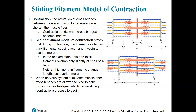This is going to end when the cross-bridges stop being formed. In the sliding filament model of contraction, the idea is that neither the thick filaments nor the thin filaments actually change length — they just move past each other. That's why it's called the sliding filament model.